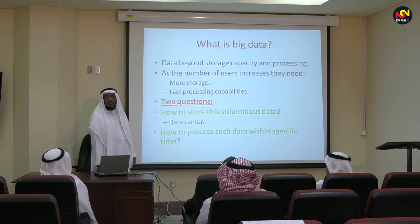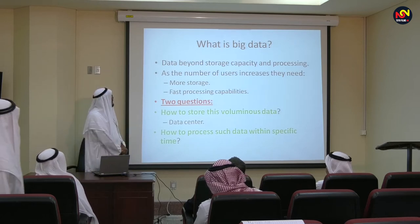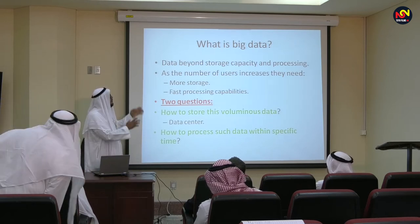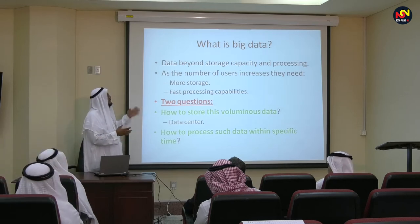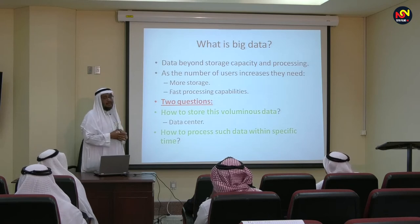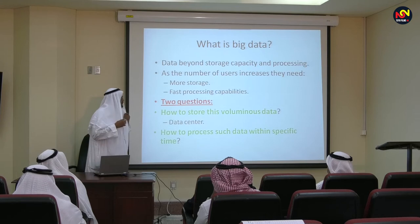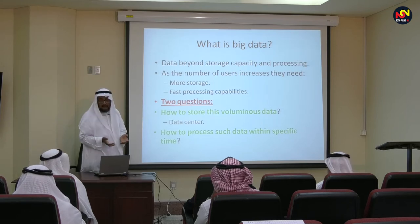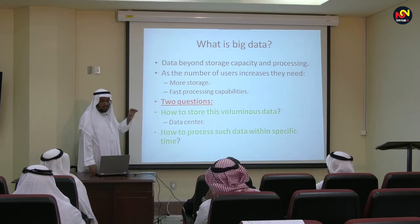The current data is beyond the storage capacity and also beyond the processing capability of regular machines. So there are two questions: how to store this volume of data, and how to process it. That is why we are going to talk about the two core parts in the diagram. The idea is divide and conquer: split the data, make different jobs, and run them in parallel — they are independent. Then collect the results and make your summary.